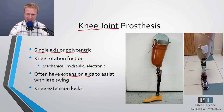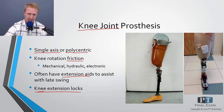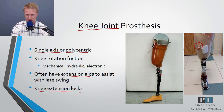Some prostheses have a knee extension lock: as the person comes to full upright, the knee locks in place. To sit down, the person must pull a handle to unlock the knee and allow flexion.